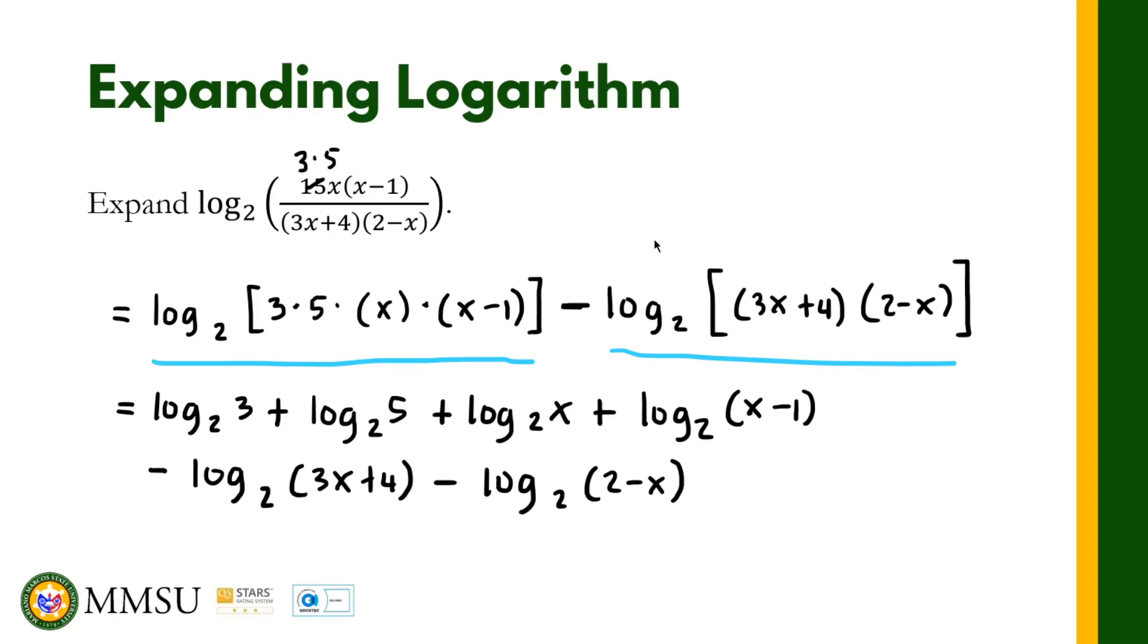Since this is a product we should have plus right here. So we can actually write this like that. This is the sum of the logarithms of the two products. This minus sign right here will be distributed to all the terms in this bracket, so it becomes minus and minus right there.